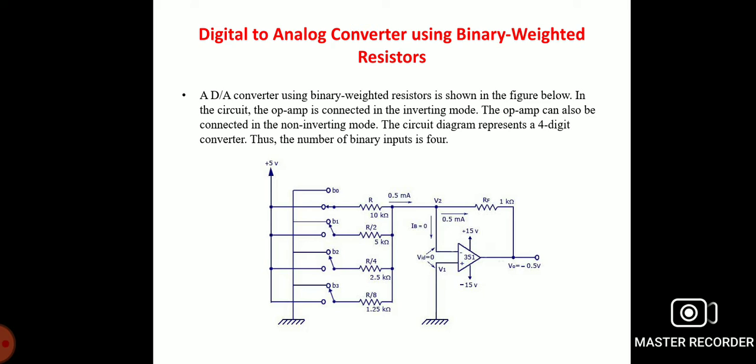This diagram represents a 4-bit converter, so the number of binary inputs is 4. A 4-bit converter will have 2 to the power 4, equal to 16 combinations of output, so 16 corresponding analog outputs will be present. The four switches from B0 to B3 simulate the binary inputs. A 4-bit binary counter such as the 7493 can be used as the binary weighted resistor input.